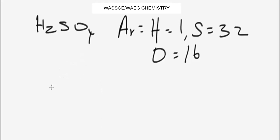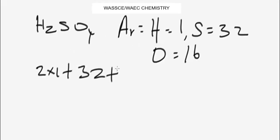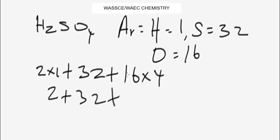We add the relative atomic masses of all atoms in H₂SO₄. There are two atoms of hydrogen: 2 × 1. One atom of sulfur: 32. Four atoms of oxygen: 4 × 16 = 64. So the total is 2 + 32 + 64 = 98 grams per mole.